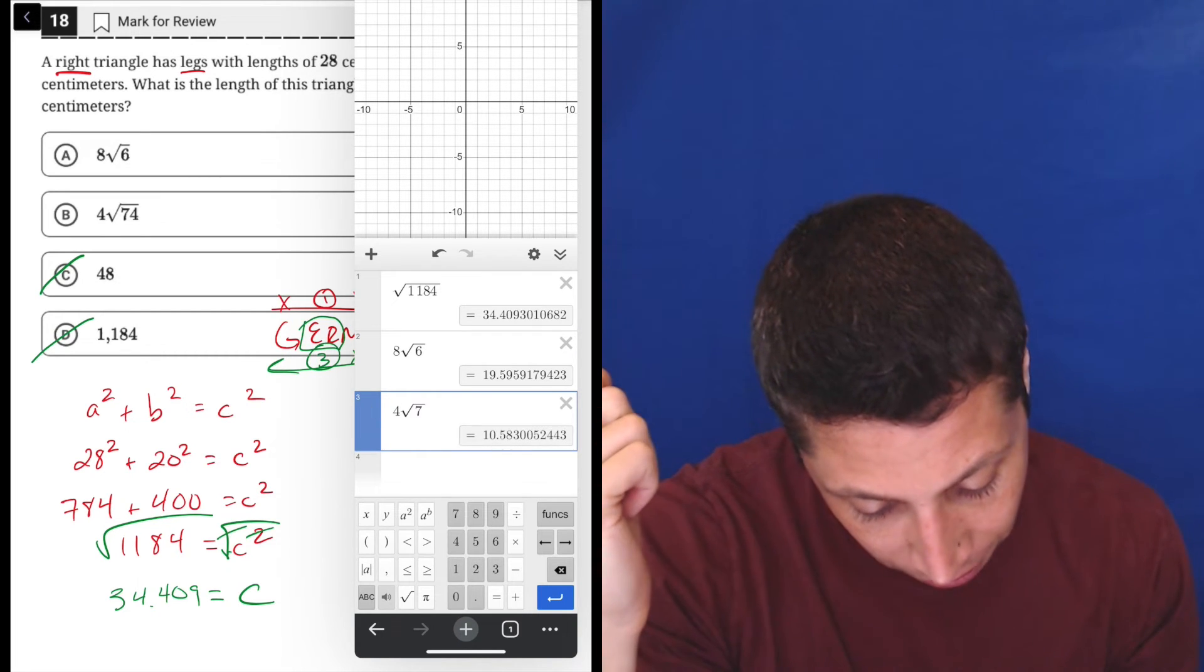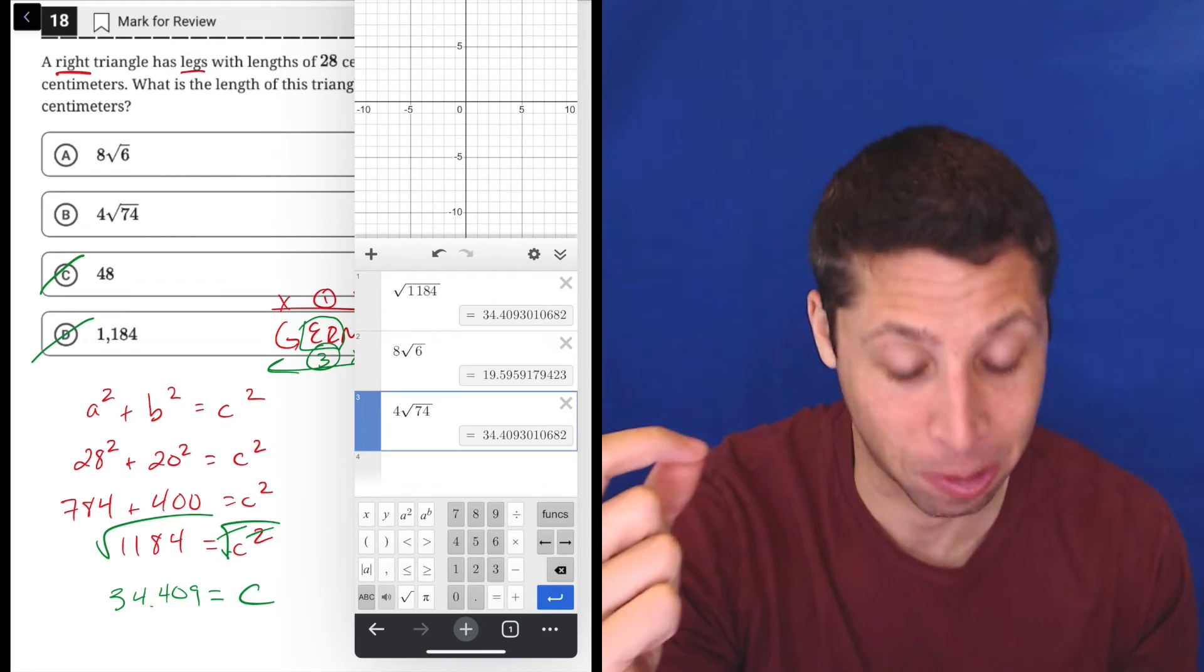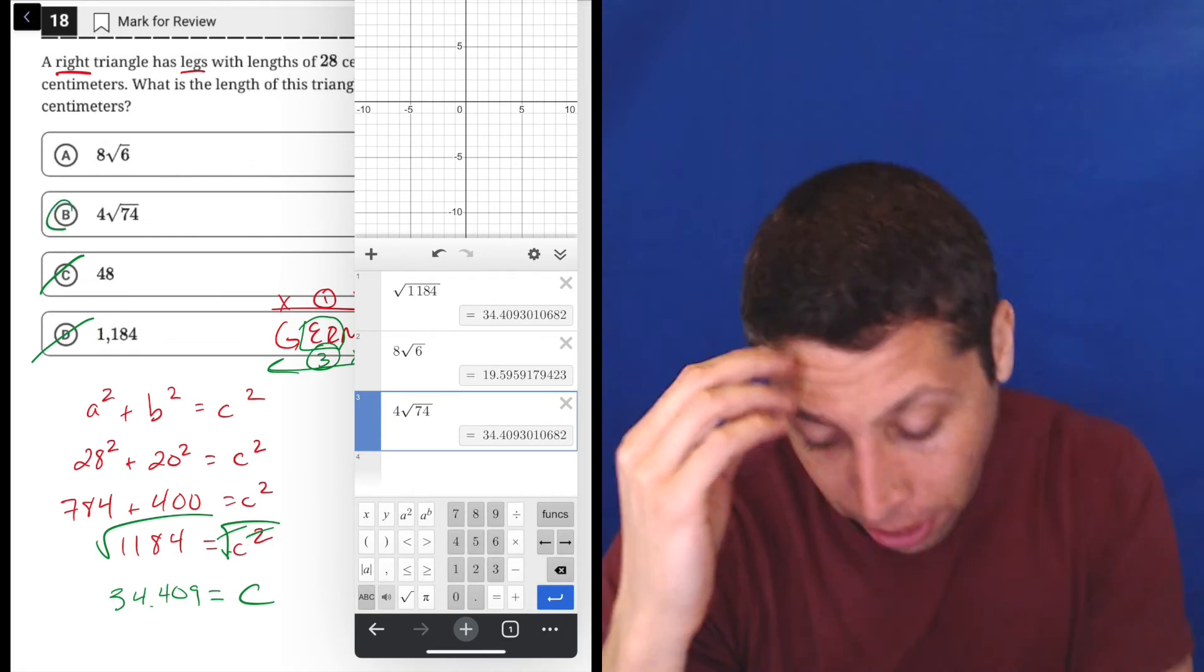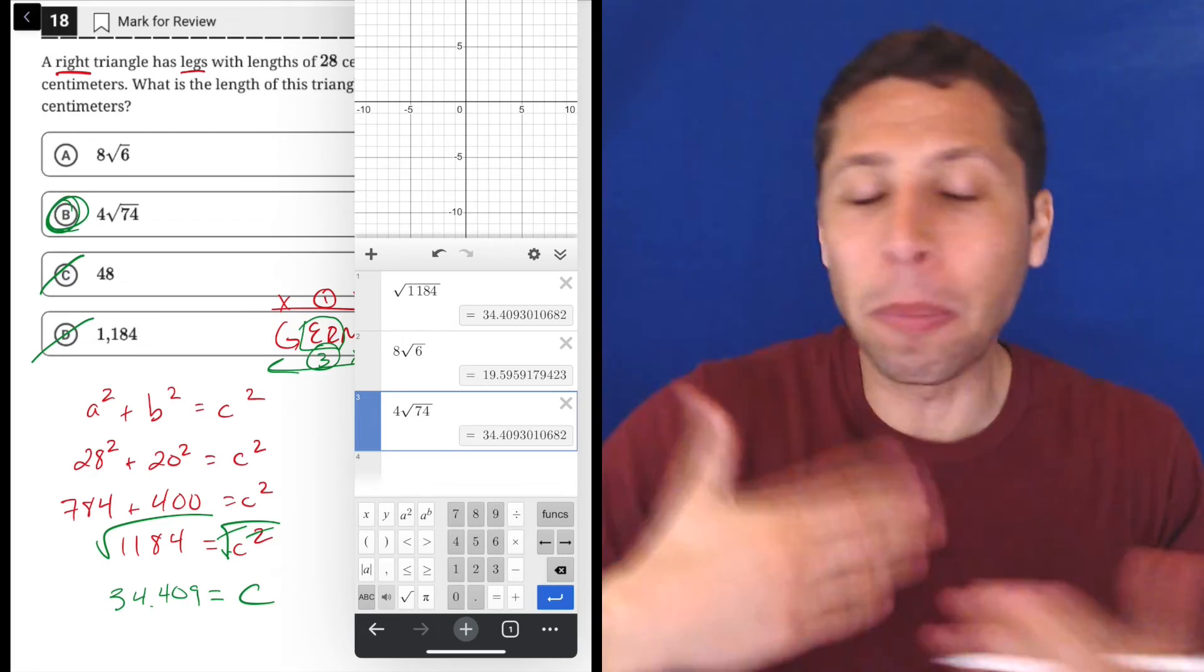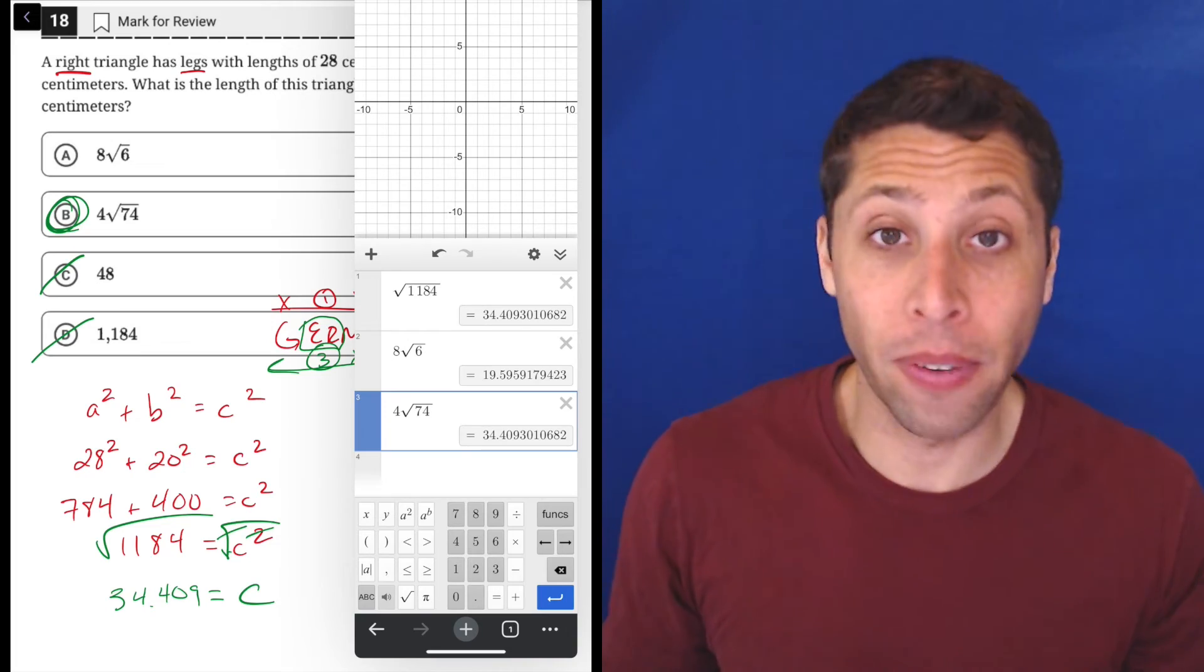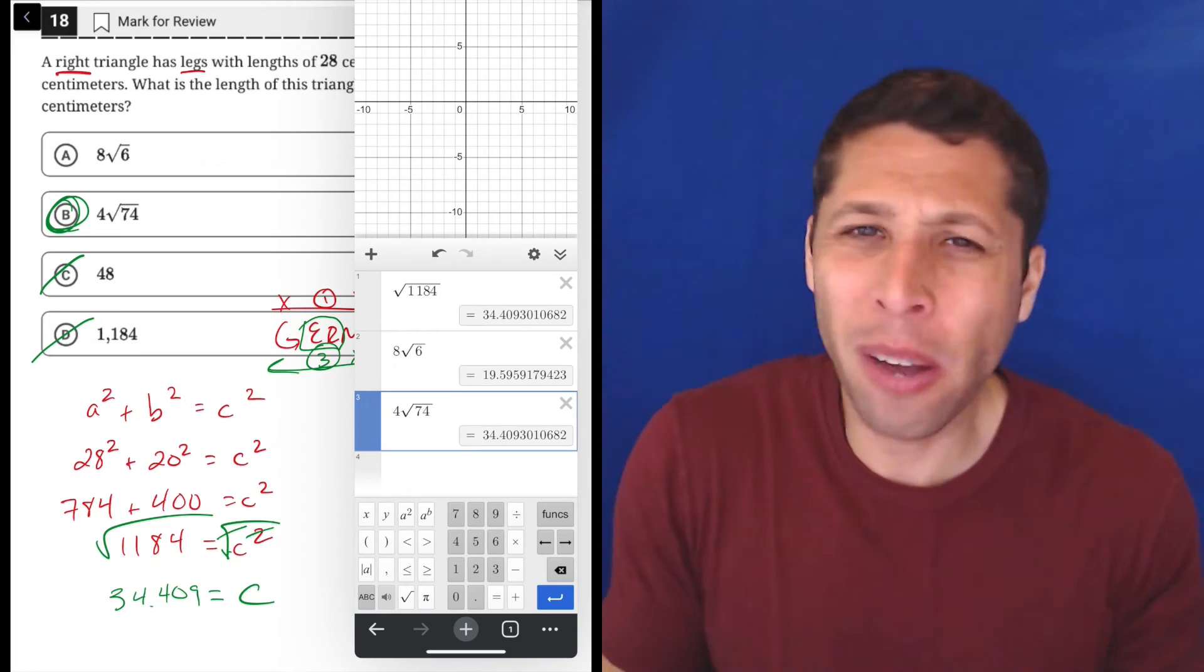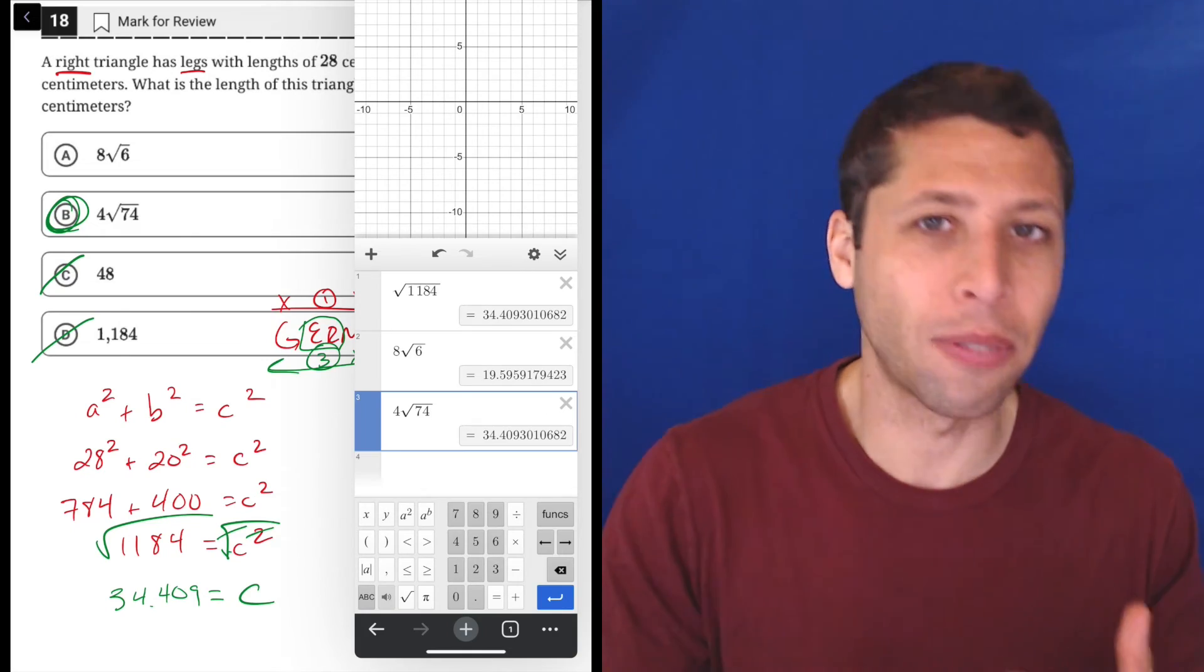And if I put that in, notice that is the exact same decimal as I wanted. So now I know that B is the answer. And that's fine. You know, there are ways to simplify radicals and understand why four root 74 is like this simplified answer, but it's not worth your time. Right now, just focus on getting most questions right. You'll learn this stuff over the next couple of years.